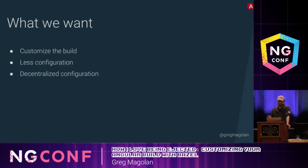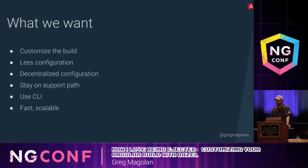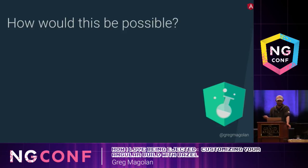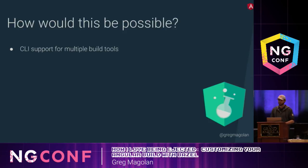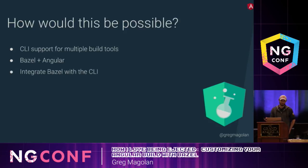It would be great if the configuration was decentralized, meaning there are no large central configuration files that cause merge conflicts. We'd be able to stay on the supported path for the build tool you're using, even though you want to add customization. You'd still want to be able to use the CLI to get all those benefits. And as a bonus, it would be great if the build system was also fast and scalable. We are currently introducing a way for the CLI to support more than one build tool — currently it's using a fixed webpack configuration — and today it is possible to build an Angular application and library using Bazel. This is still an Angular Lab, so it's not ready for production, and we are investigating how to integrate Bazel with the CLI so that you can use both at the same time and get the benefits of both.